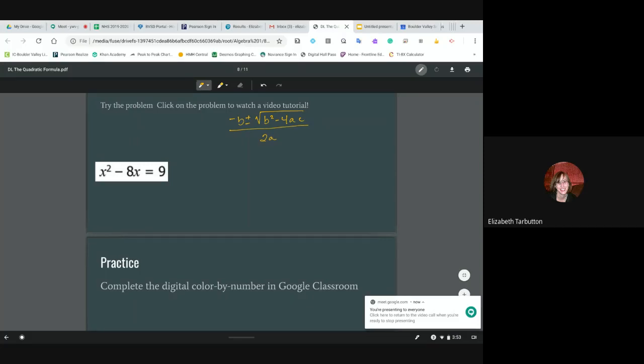Hi friends, we're going to try this next problem. Hopefully you've had a chance to try it on your own. We have x² - 8x = 9. Subtracting 9 from each side, we get x² - 8x - 9 = 0.